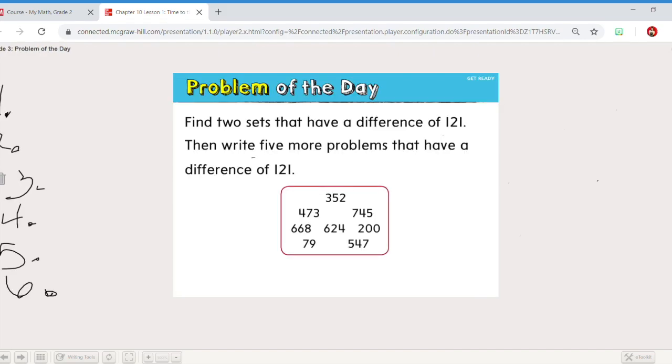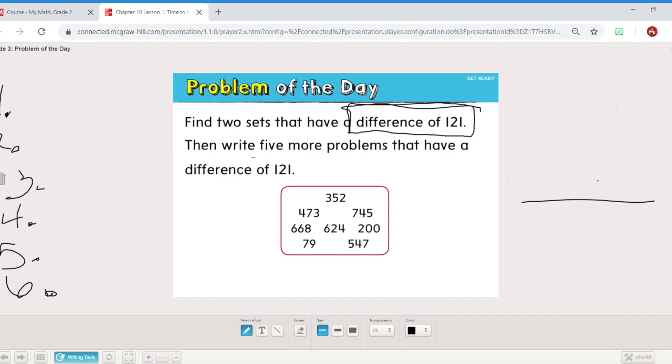We're going to jump right into our problem of the day before we start looking at clocks. Our problem says find two sets that have a difference of 121, then write five more problems that have a difference of 121. Now when we're looking at difference, that means we're looking for a subtraction problem. The difference is the answer to a subtraction and we want the end result to be 121. So we're going to use two of these numbers to figure out if I subtracted them if we'd get that number.